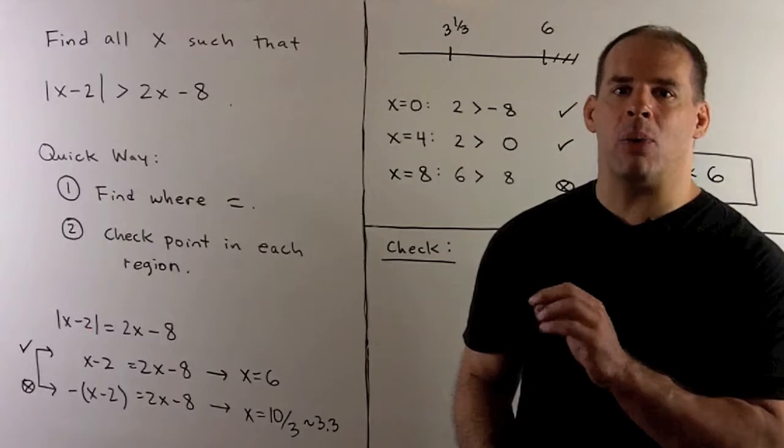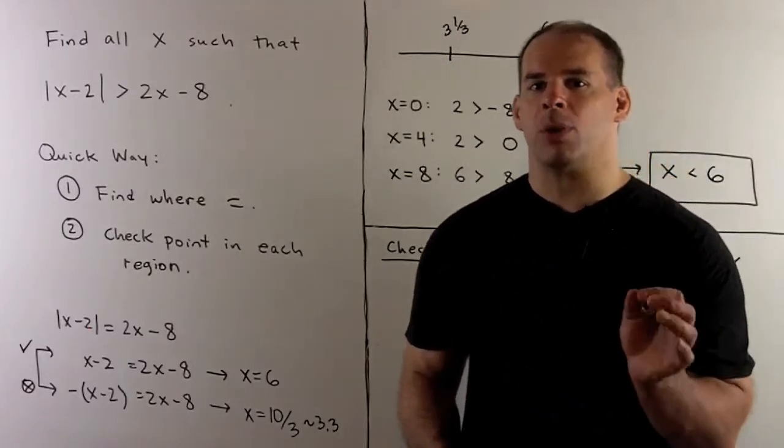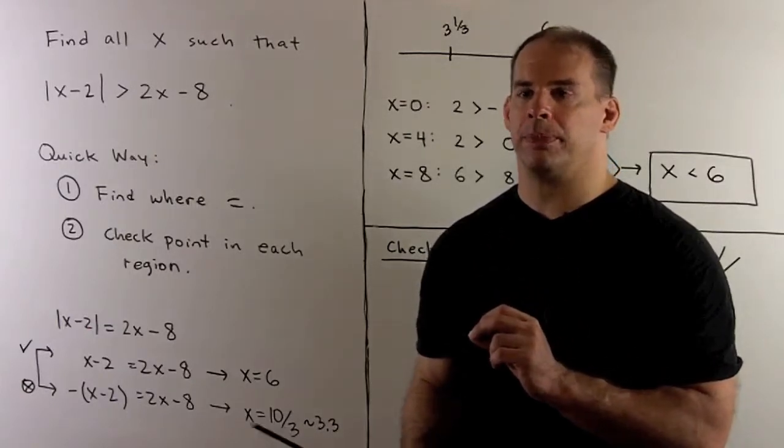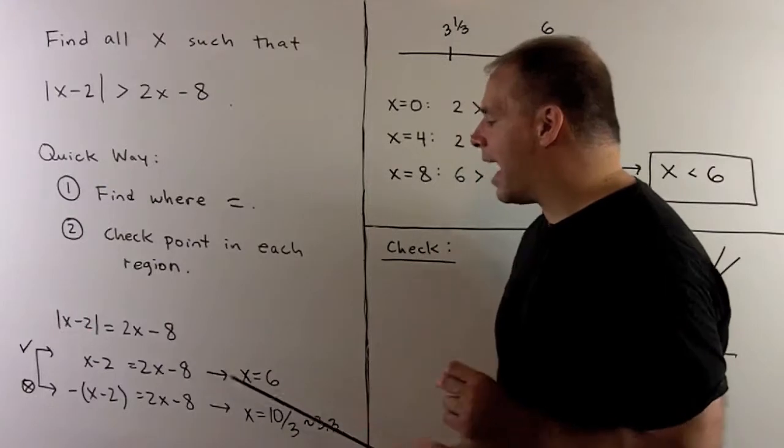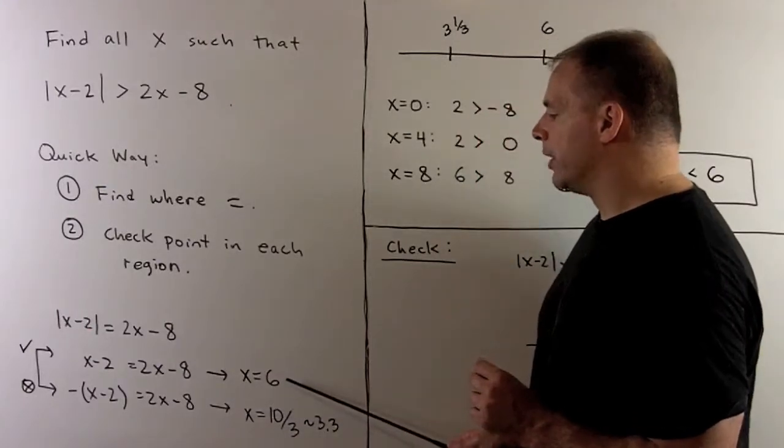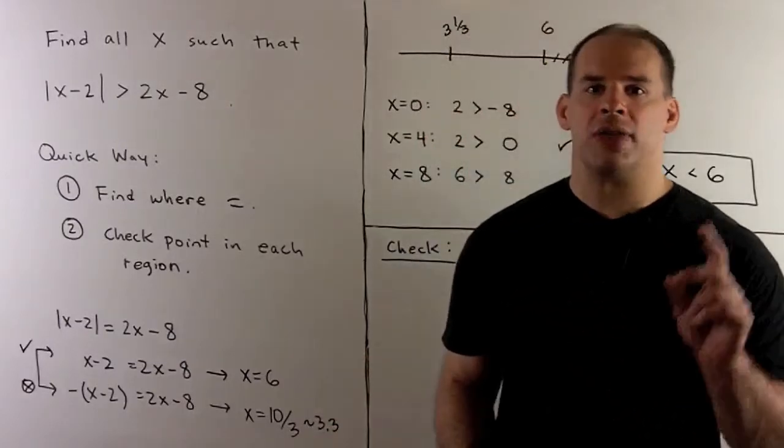Here we're not going to worry about whether x minus 2 is positive or negative. We're just going to solve, and then when we're done, we'll see if our answers make sense. For the first one, if we solve, I get x equal to 6. If I put that back in the original equation, we have 4 equals 4, so that's a solution.